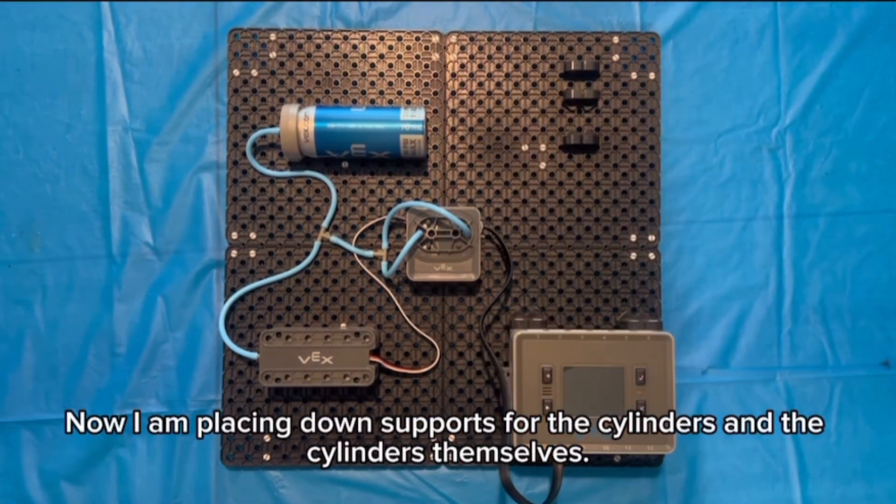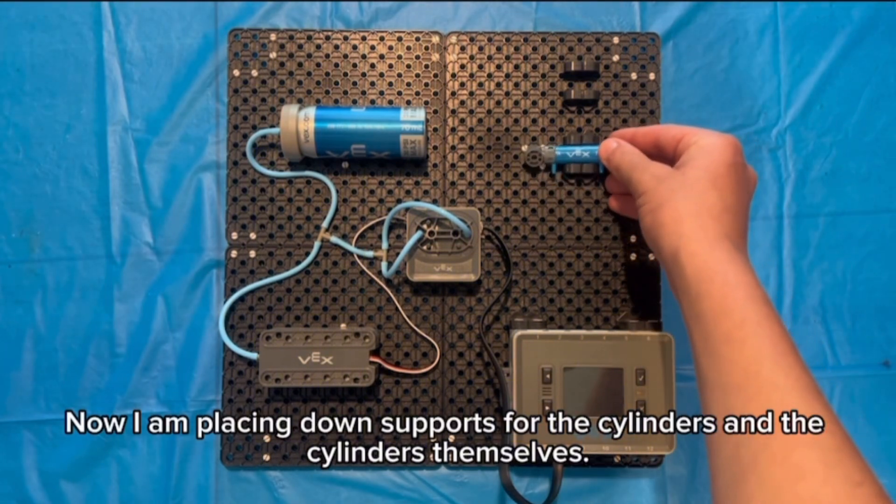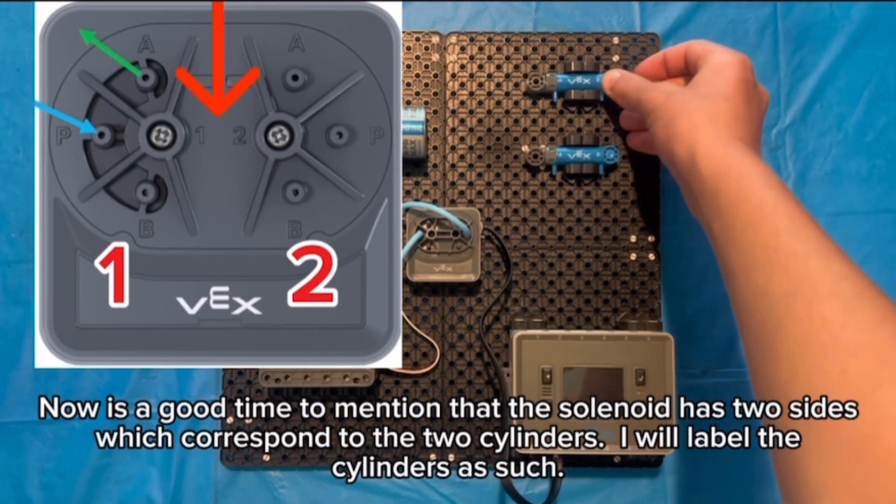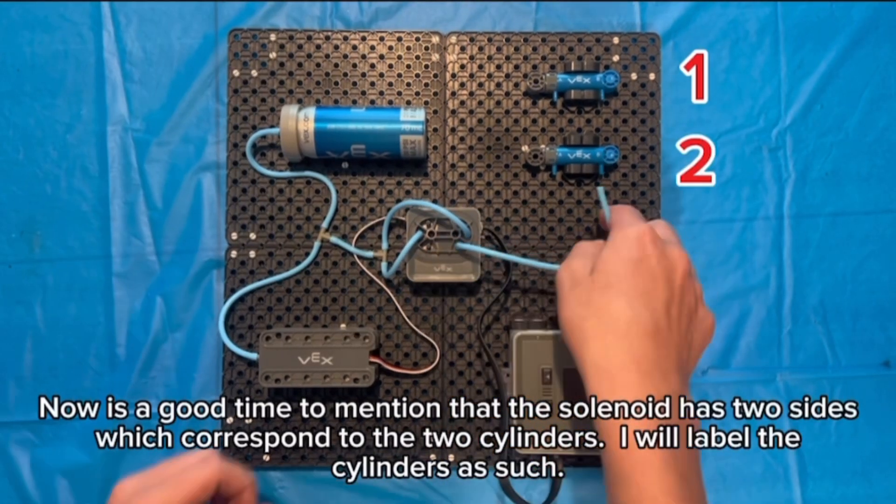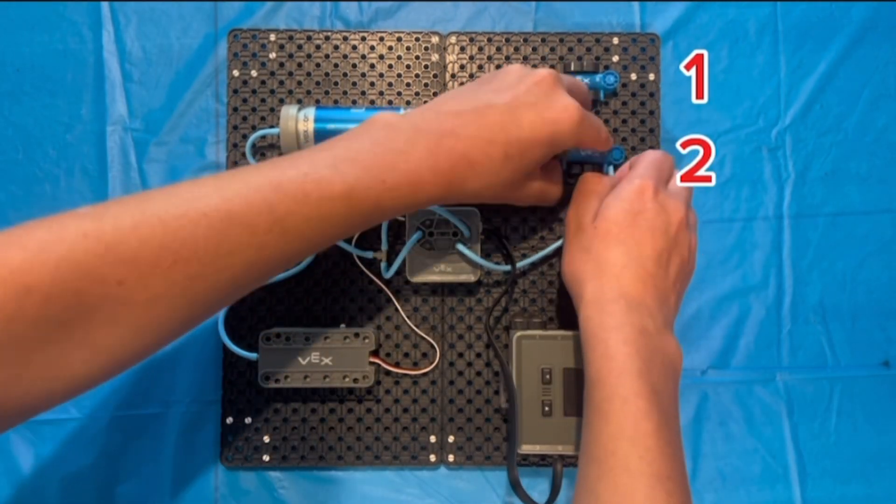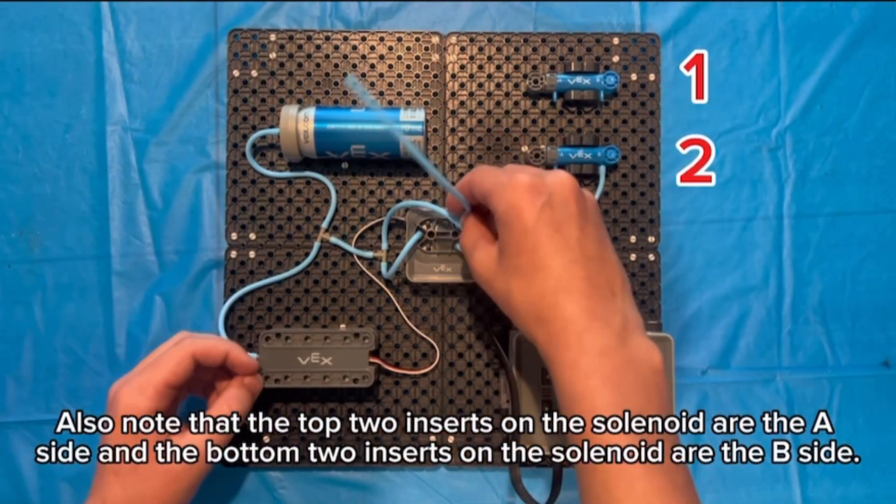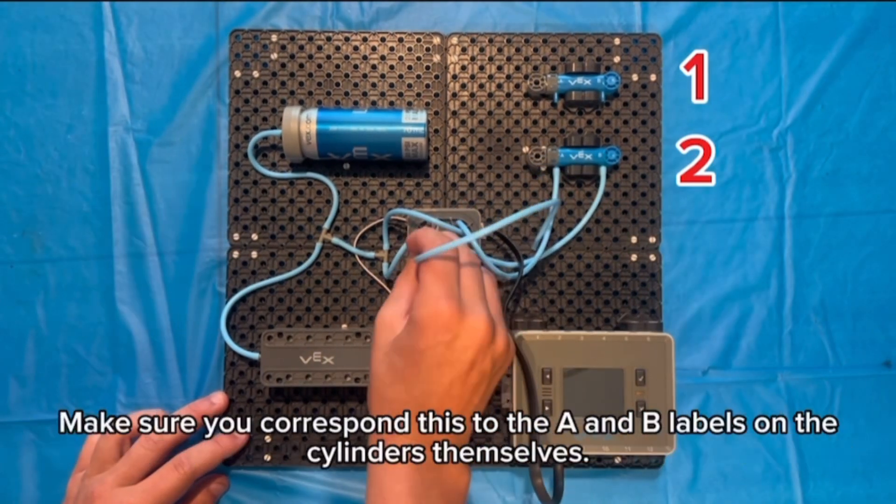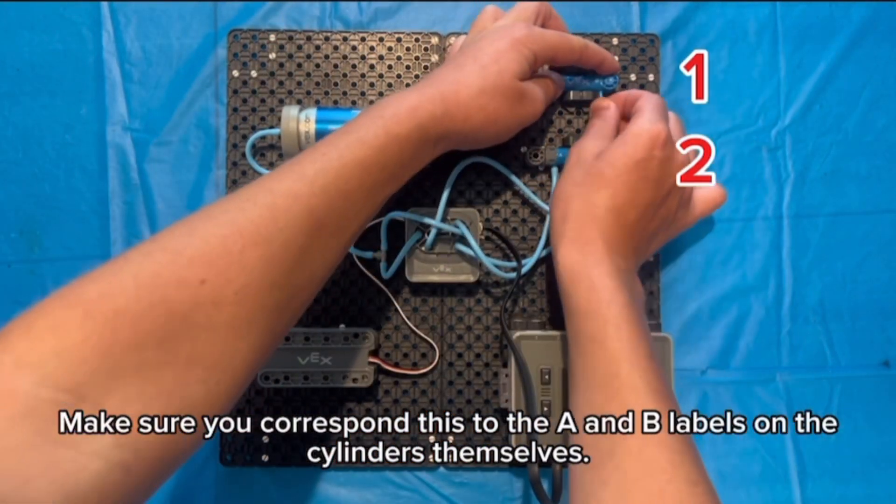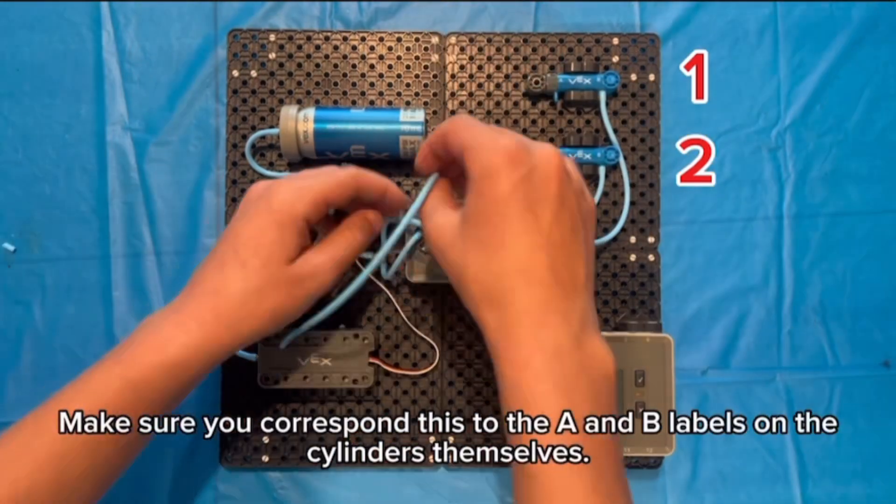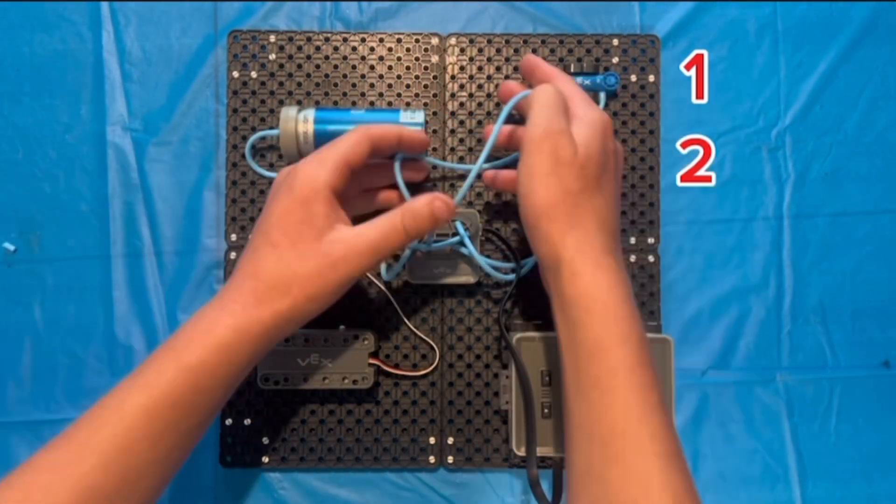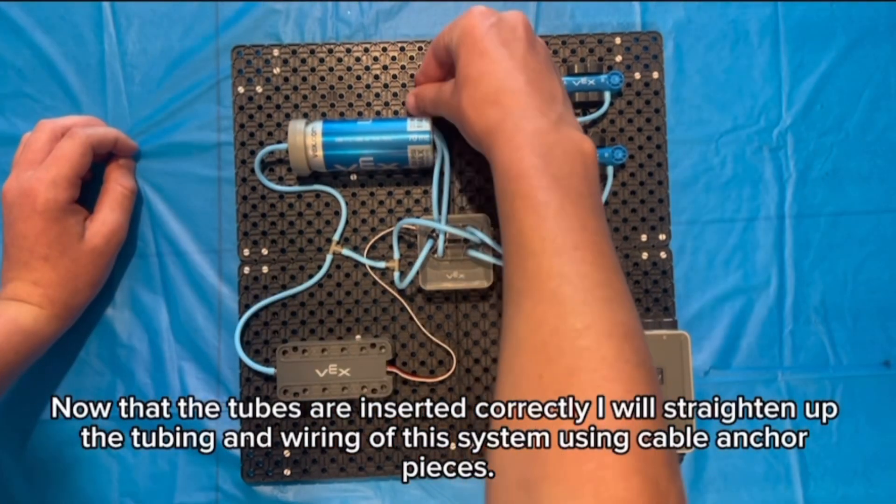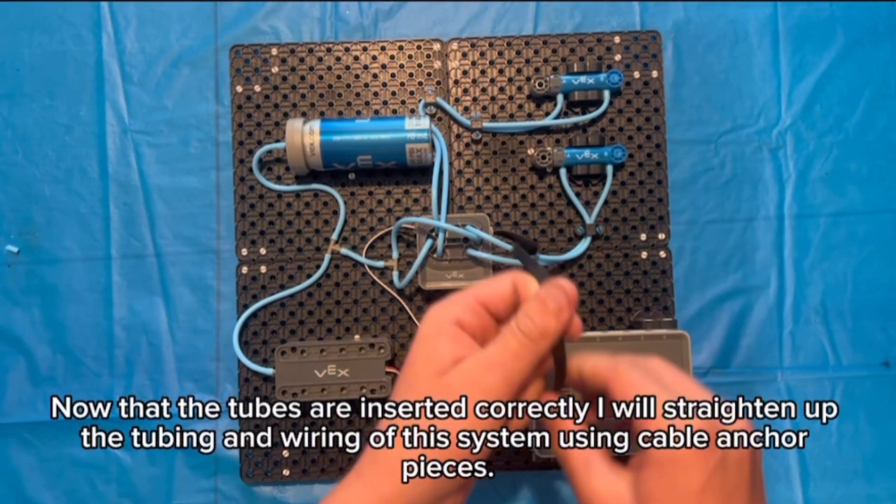Now I'm placing down supports for the cylinders and the cylinders themselves. Now is a good time to mention that the solenoid has two sides which correspond to the two cylinders. I will label the cylinders as such. Also note that the top two inserts on the solenoid are the A side and the bottom two inserts on the solenoid are the B side. Make sure you correspond this to the A and B labels on the cylinders themselves. Now that the tubes are inserted correctly I will straighten up the tubing and wiring of the system using cable anchor pieces.